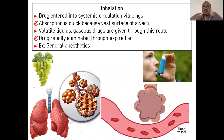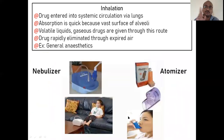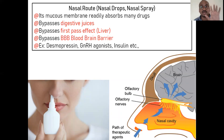Inhalation route: drug is delivered through the lungs. The lungs have a very large surface area because the alveoli look like bunches, and each alveolus is exposed to the blood. This vast surface area of the alveoli makes inhalation a very good route. Both local and systemic action can be achieved by inhalation. Drug enters the systemic circulation via the lungs using an atomizer or nebulizer. Nasal route is also used for both local delivery and systemic circulation.